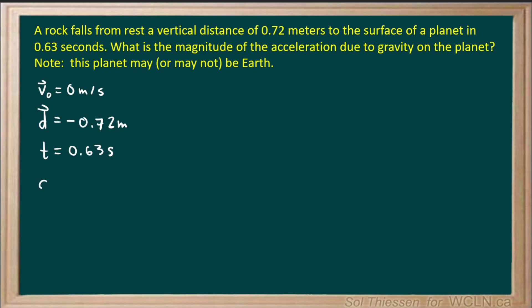Now we want to know the magnitude of the acceleration. So we can use a formula to find the acceleration, and then we can take the magnitude of that number. The formula that we're going to use is displacement equals initial velocity times time, plus one-half times acceleration times time squared.